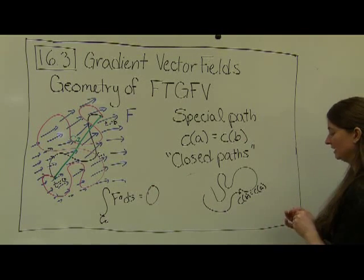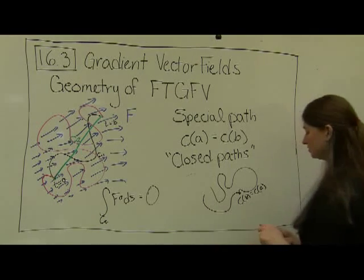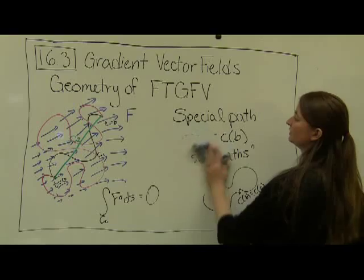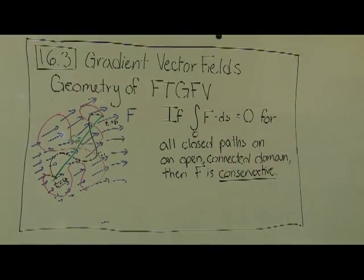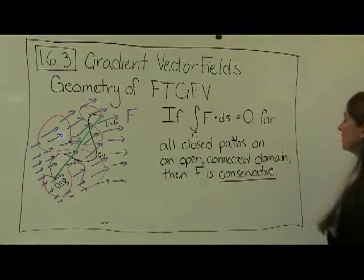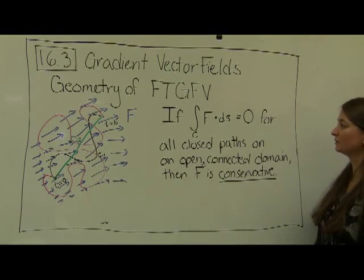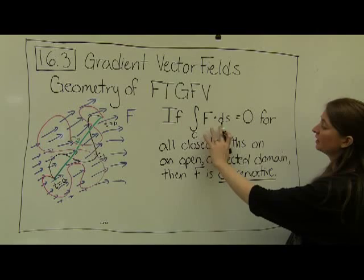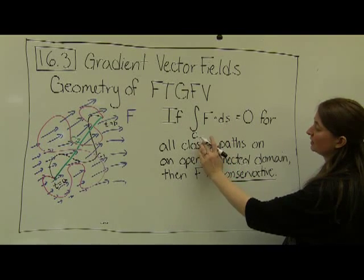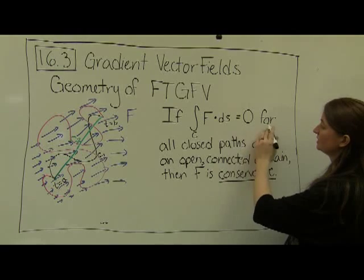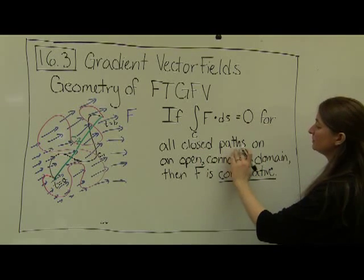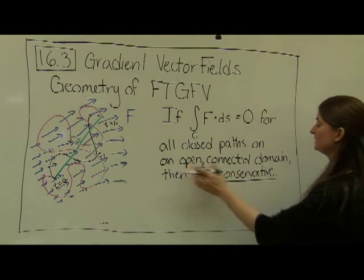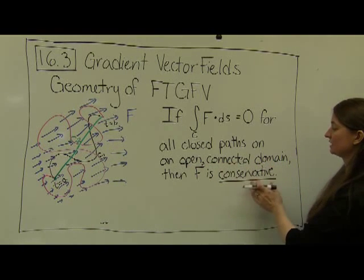And this property, the fact that our line integral over closed paths are equal to 0, is the property of being a conservative vector field. So this gets to our definition of what it means for a vector field to be conservative. We say that if our vector line integrals over a path c equals 0 for all closed paths, so this c had to be a closed path, on an open connected domain, then F is conservative.